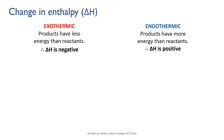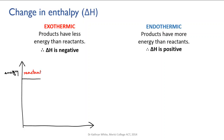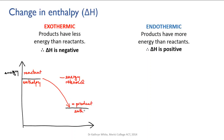A negative delta H value means that energy was lost during the reaction, so this would be an exothermic reaction. You have the reactant enthalpy minus the energy that gets released equals the product enthalpy.